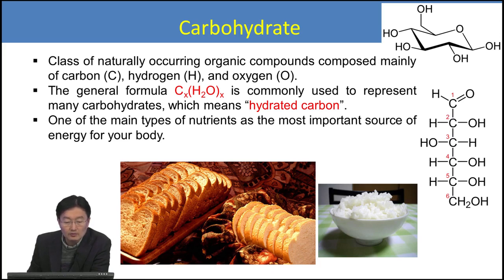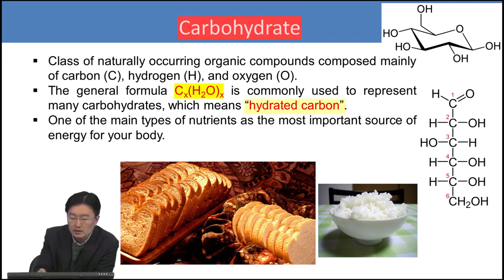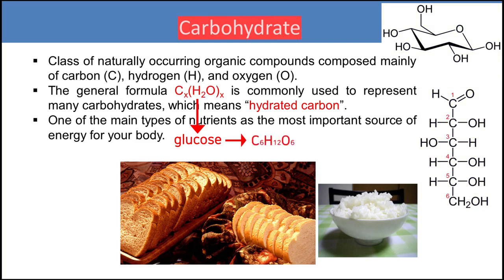In the beginning, we have to review what carbohydrate is. The general chemical formula is C(something)·H₂O(something) — in other words, hydrated carbon. One good example is glucose, the most important source of carbohydrate for your body, from corn and rice. Looking at the linear or ring form of glucose, the chemical formula is C₆H₁₂O₆ — a six-carbon-containing hydrated molecule.